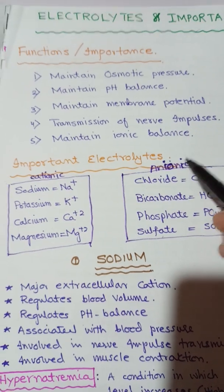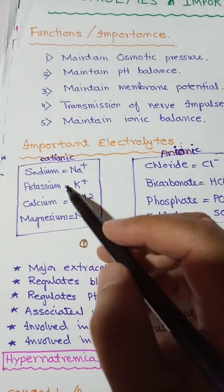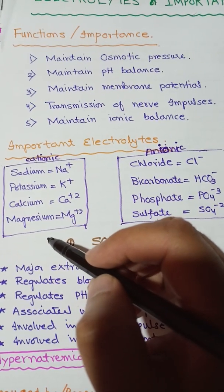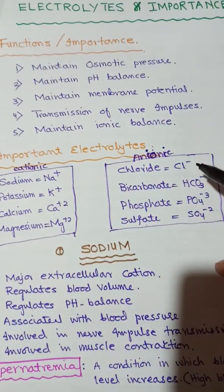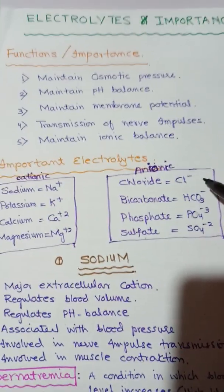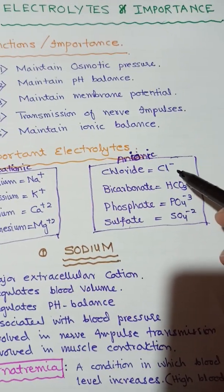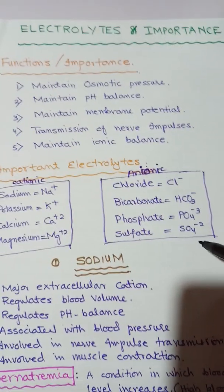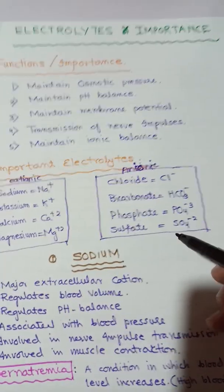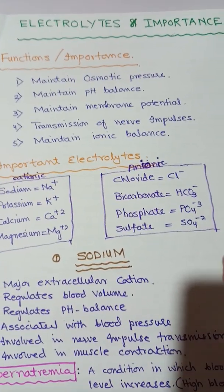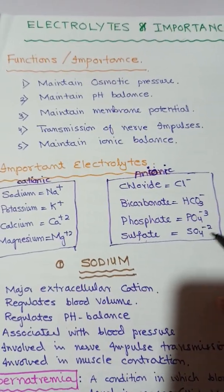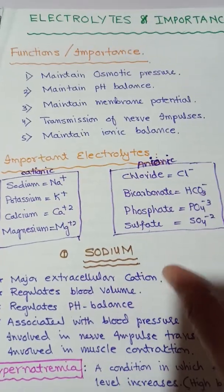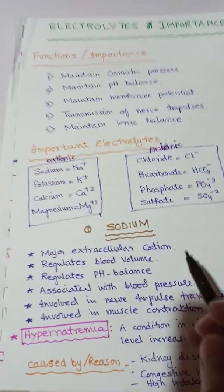Some important electrolytes may be cationic or anionic. Important cationic electrolytes are sodium ion, potassium ion, calcium ion, and magnesium ion — these are major electrolytes inside living organisms. Similarly, anionic electrolytes are chloride ion, bicarbonate ions, carbonate ions, phosphate ions, and sulfate ions. These are the major anionic electrolytes inside the living organism, though some others are also present.